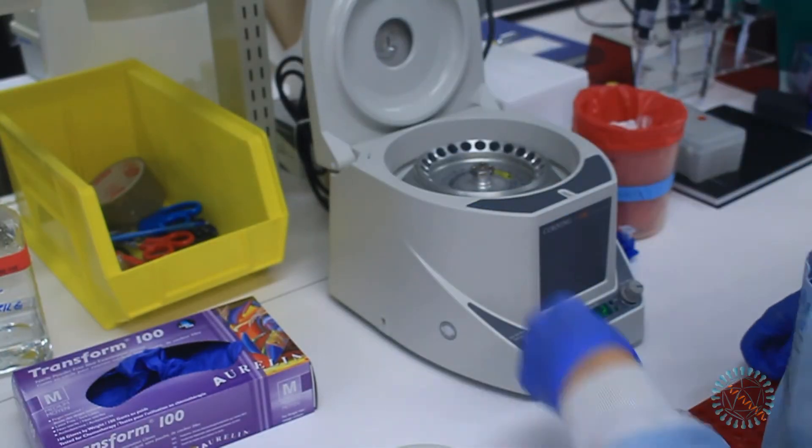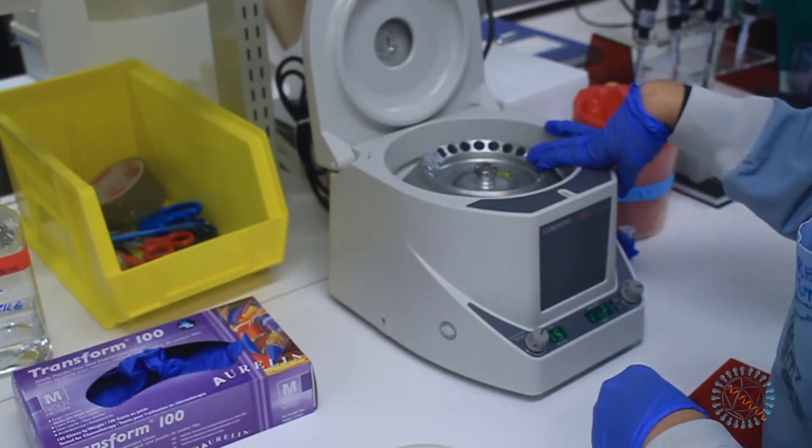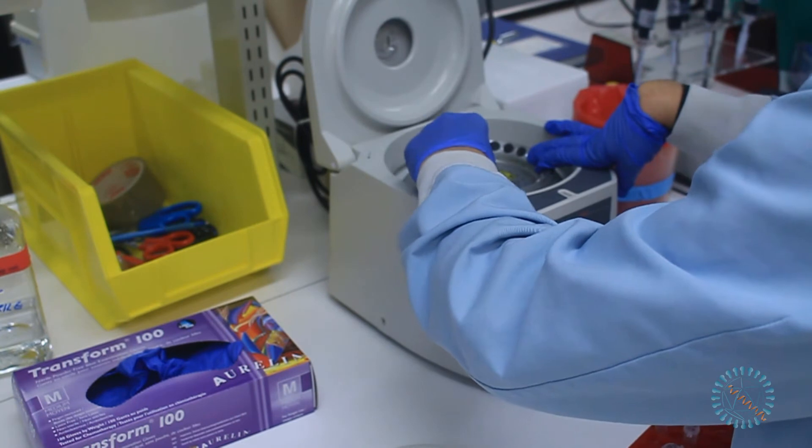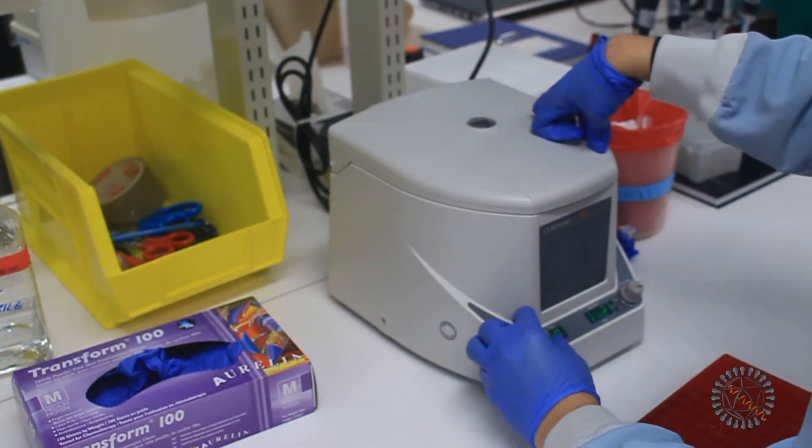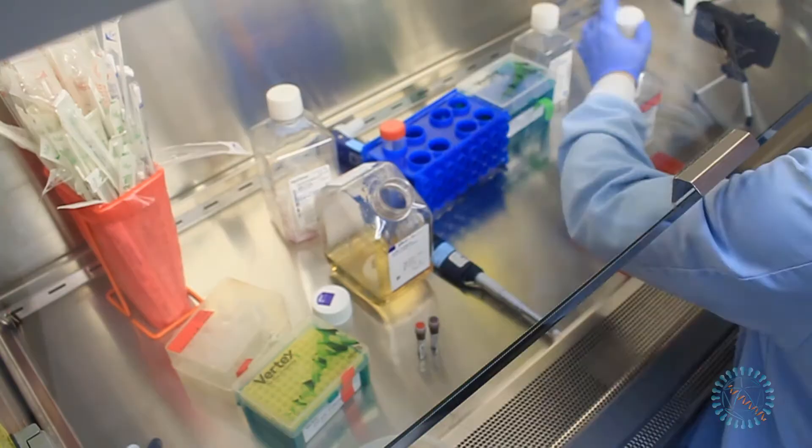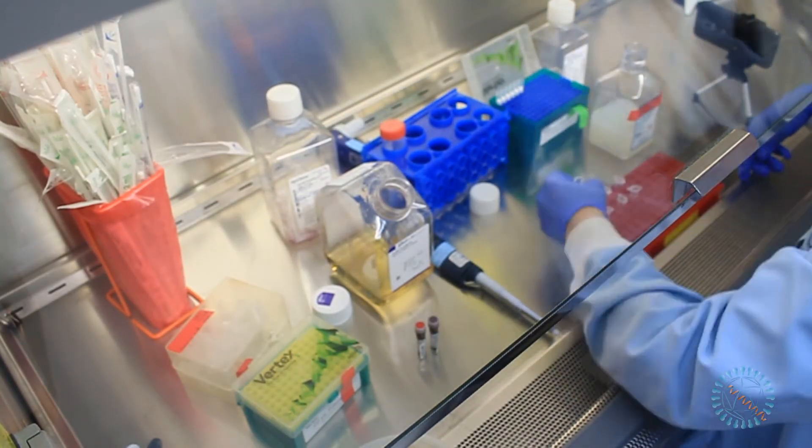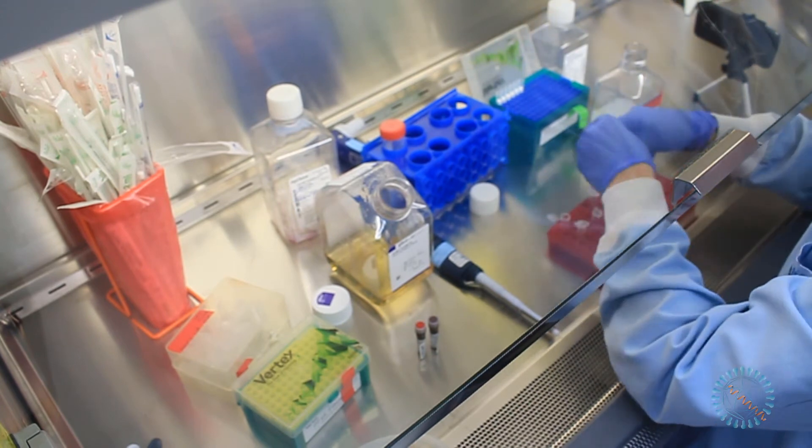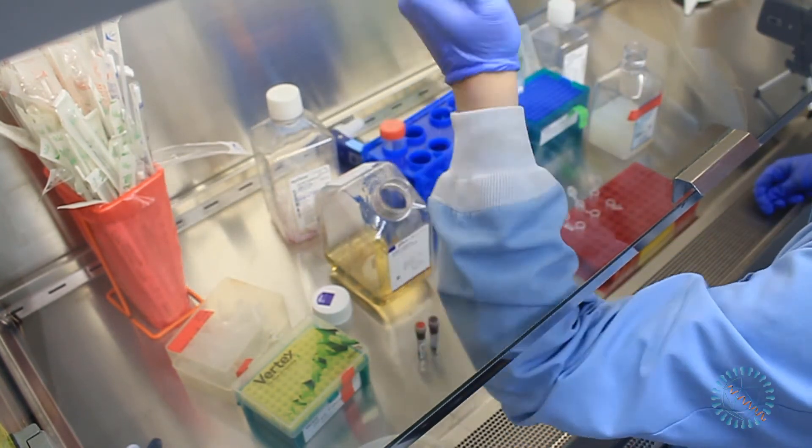We will now proceed to pellet down our cells using a microcentrifuge, so that we can then remove the old media and wash the cells. The centrifugal force will depend on the type of cells and the experiment. In this case, I will use 200g's for 5 minutes. After recovering the tubes from the centrifuge, I will discard the old media in the waste container and then proceed to wash the pellet of the cells using fresh media.